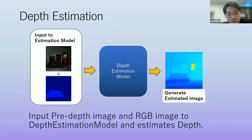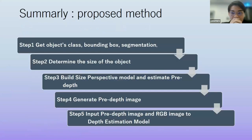So after the training of the size perspective model, it generates, it outputs the pre-depths. We have pre-depths and the segmentation information. So we generate the pre-depth image based on the image where all pixels are zero. We generate the pre-depths image by filling the segmentation area with pre-depths. Finally, we got pre-depths image. So we input the pre-depths image and RGB image to depth estimation model and estimate ultimate depth and generate a depth image. So the explanation is a bit long. So we prepare a summary part. Step one, get the object class bounding box segmentation. Step two, determine the size of the object. Step three, build size perspective model and train and estimate pre-depths. Step four, generate pre-depths image. Step five, pre-depths image and RGB image to the depth estimation model.